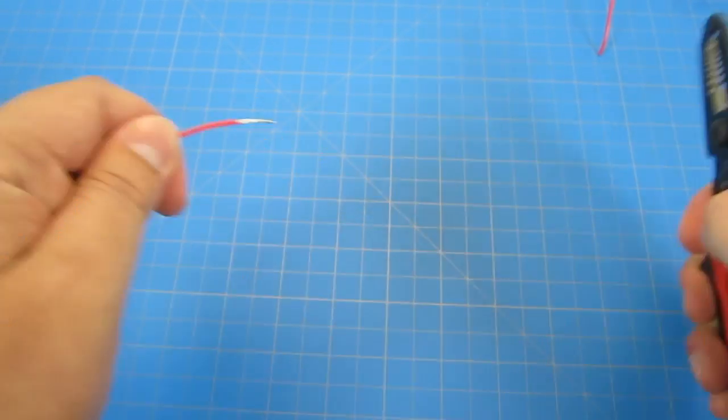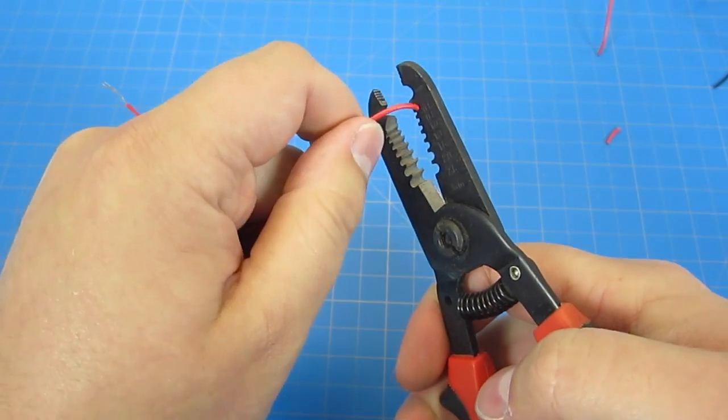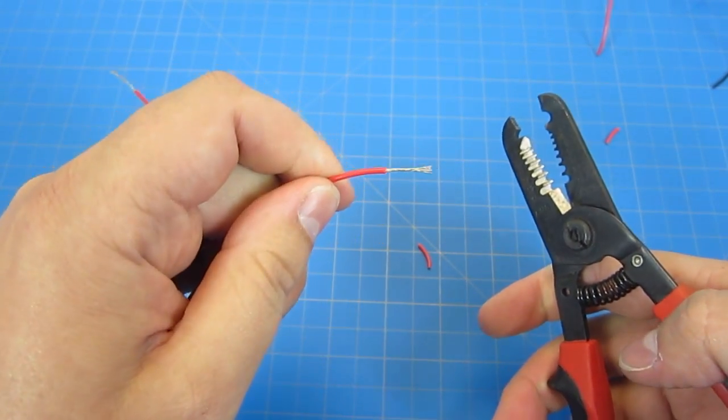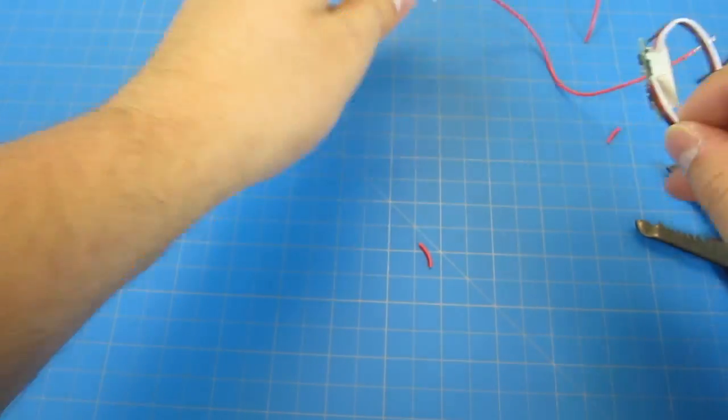First we'll be stripping the ends of our wire. We only want to do the two pieces of red and two pieces of black wire, the ones we just cut down. That short little piece you cut in half, leave those two spots for later.